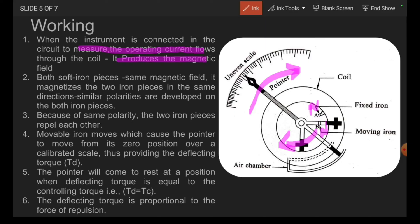This pointer also moves in the clockwise direction, which is over a calibrated scale. And this pointer moves from its zero position over a calibrated scale, thus providing the deflecting torque Td. The pointer will come to rest at a position when deflecting torque is equal to the controlling torque, that is Td equals Tc.